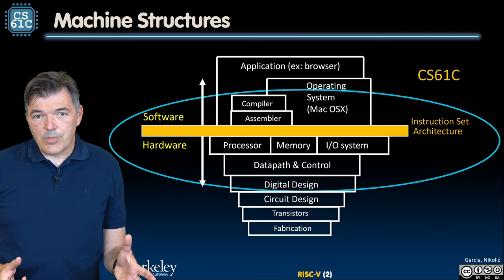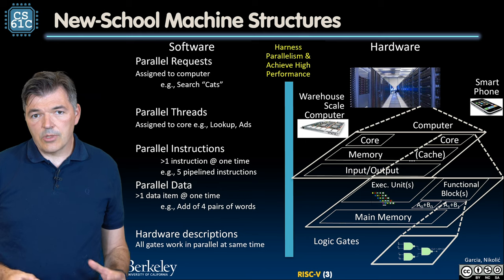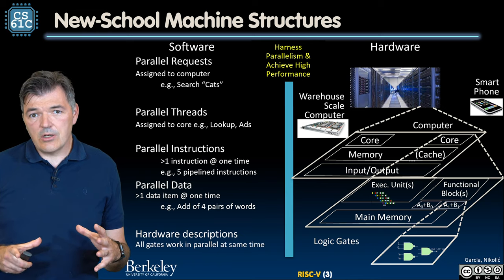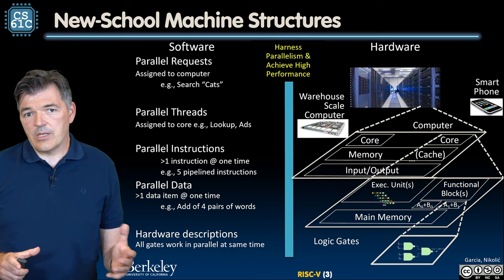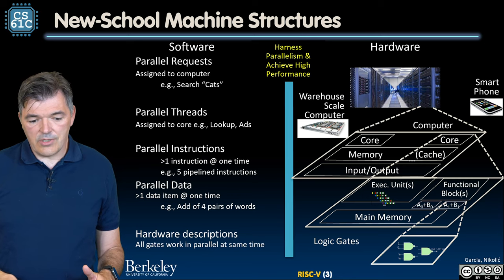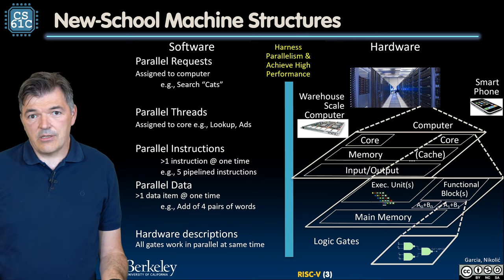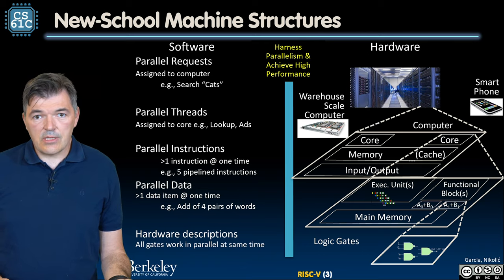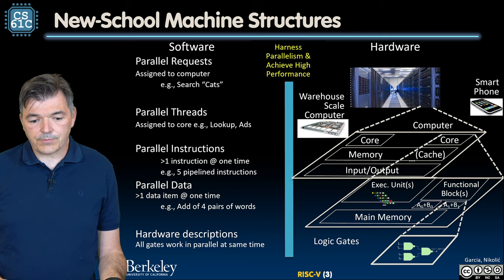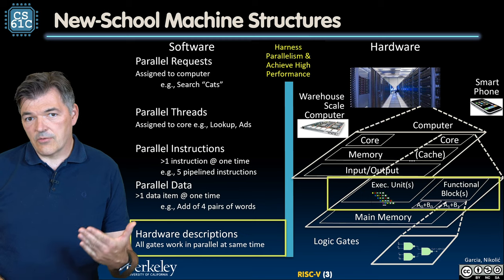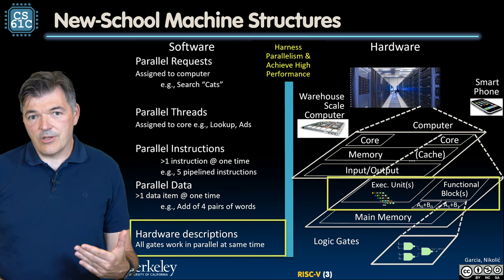This picture of machine structures still applies, but we like to look at the world now in a more 21st century kind of way. In the new school of machine structures we emphasize parallelism, and we have seen that things can be parallelized in many ways at higher levels. At the very low level, hardware descriptions are inherently parallel — all the gates switch together and operate with a very high degree of parallelism. Those functional units built out of these gates also operate in parallel, and we can have multiple functional units executing multiple instructions in parallel.